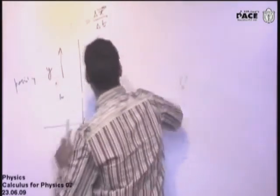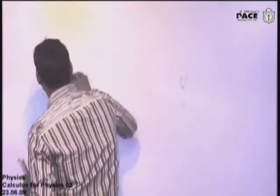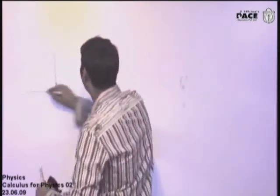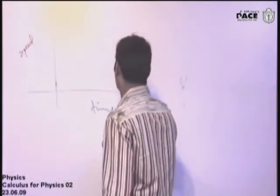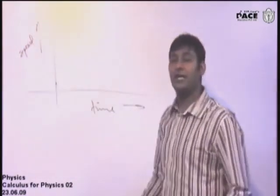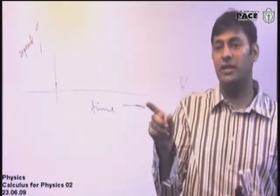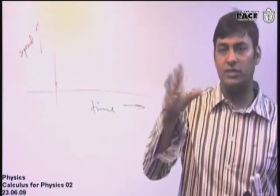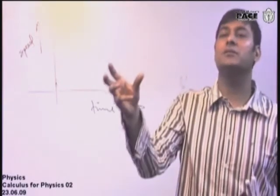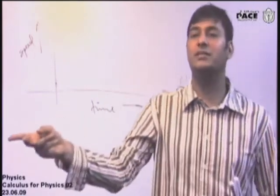So we have done the distance-time graph and displacement-time graph, and realized what the slope's meaning is. The area under the graph's meaning is not yet covered. Now we are coming to velocity and speed-time graphs. When dealing with velocity, you are just involved with change in position or change in displacement — both representing the same thing.